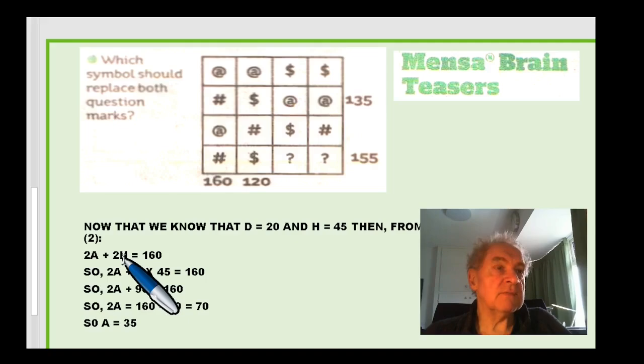You know, 2a plus 2h equals 160, so 2a plus 2 times 45, because we know that h is 45, equals 160. So 2a plus 90 equals 160. Take the 90 from both sides, you're left with 2a on the left, equals 160 minus 90, which is 70. So a equals 35.